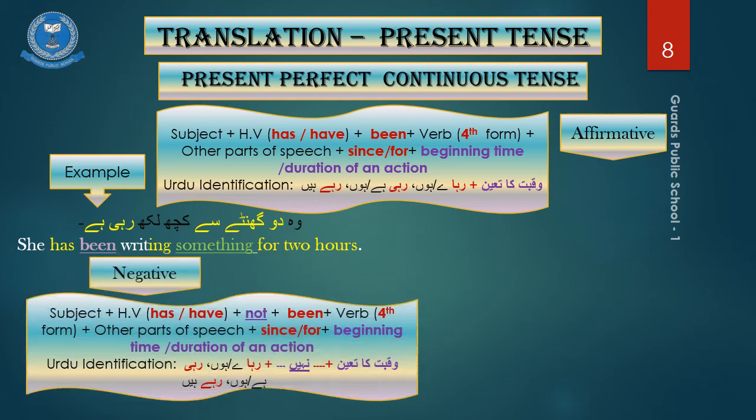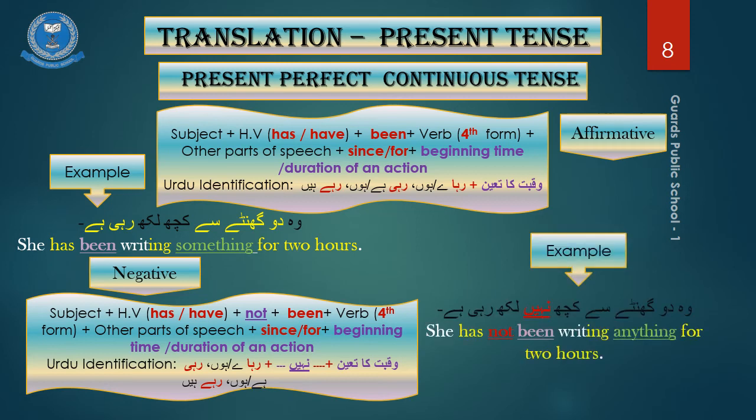For the negative sentence, we have an addition of the word of negation nahi before a verb in the Urdu sentence formation. For example, wo do gante se kuch nahi likh rahi hai. She has not been writing anything for two hours.